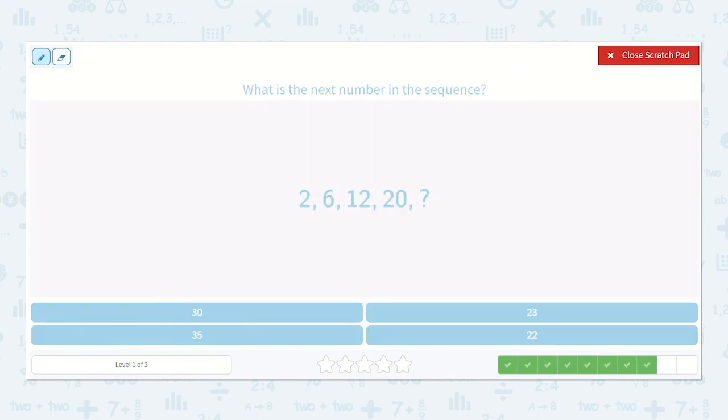Here we have 2, 6, 12, 20, and then our missing number. 2 plus 4 is 6. 6 plus 6 is 12. 12 plus 8 is 20, and then our next number is missing. 4, 6, 8, so I can tell we're skip counting by twos. These are our even numbers, like how we start 2, 4, 6, 8, yeah, 10 would be next. We would add 10. So 20 plus 10 is 30.